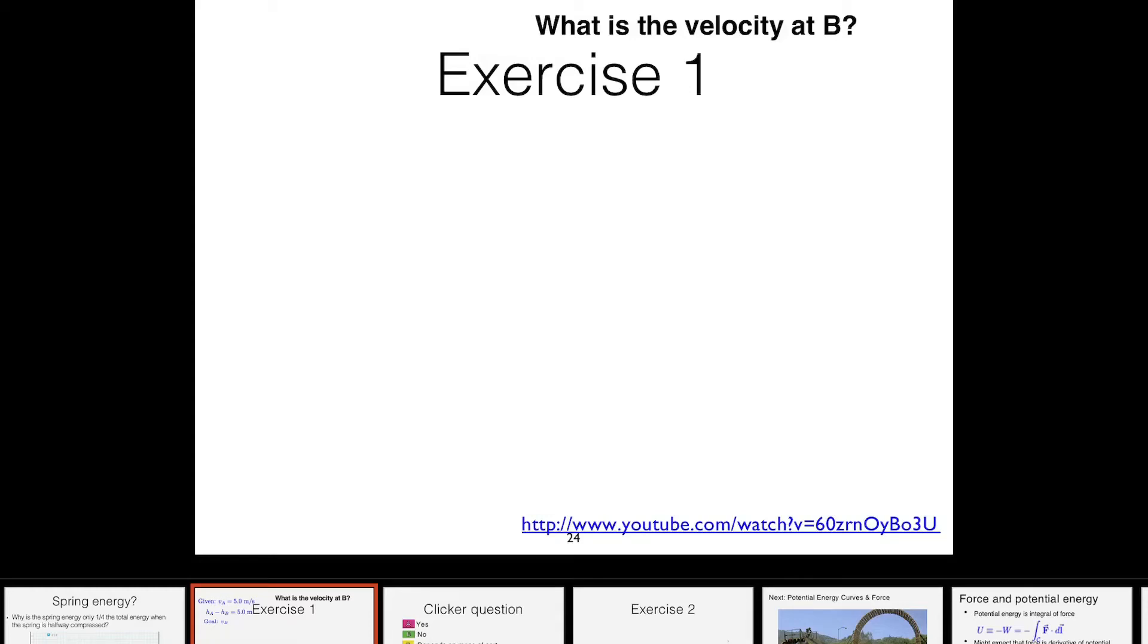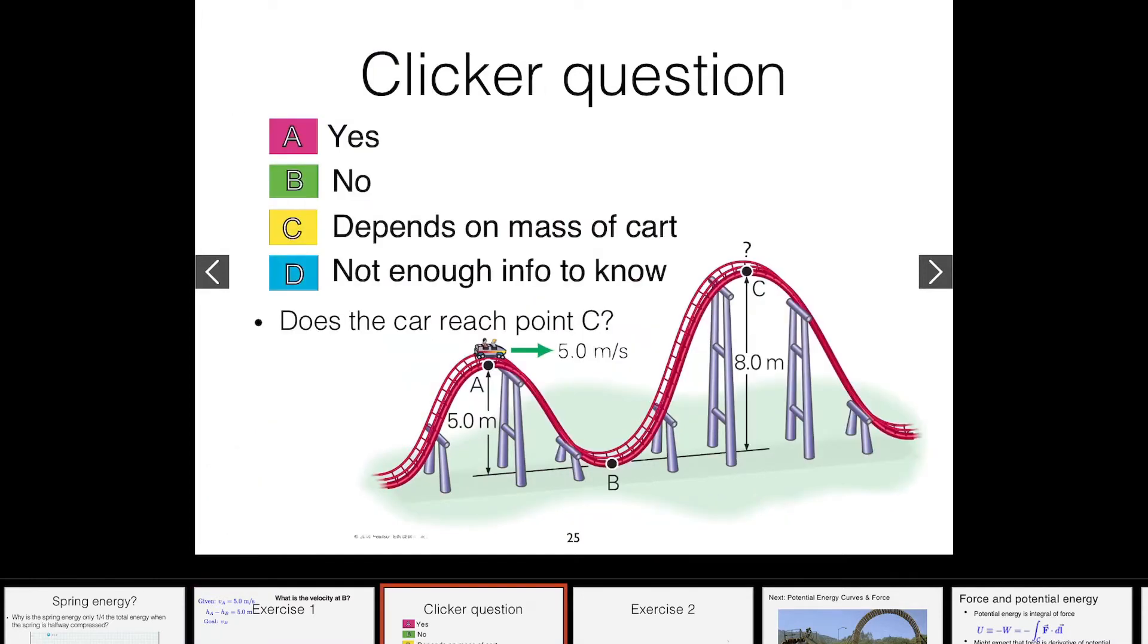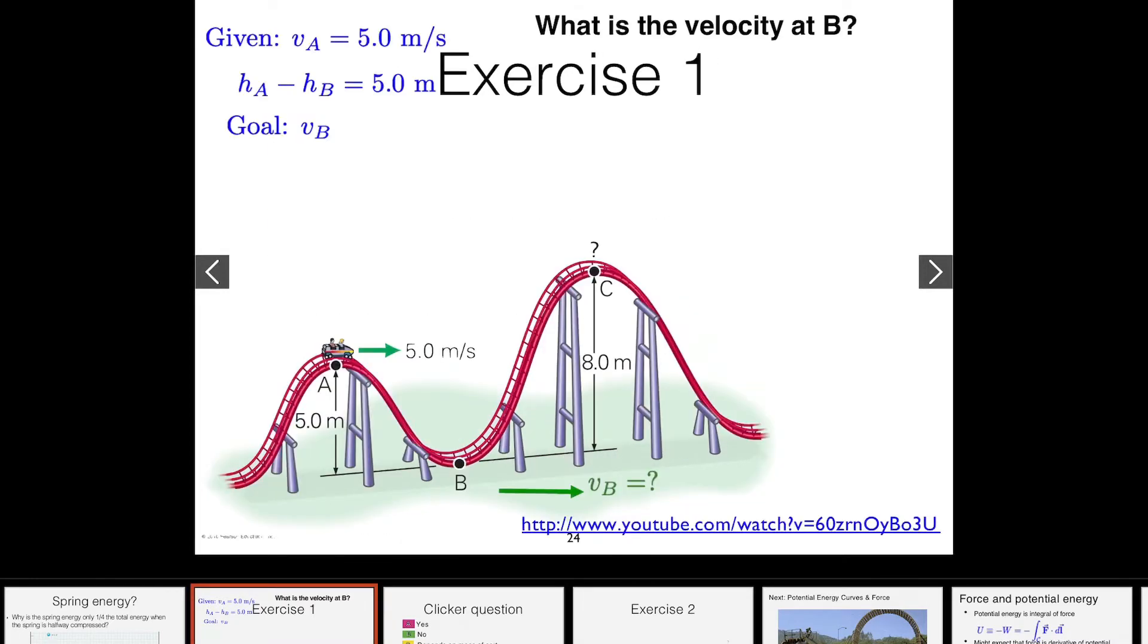Last lecture we talked about this problem where you have a roller coaster which starts at position A and goes to position B. We were trying to figure out if it makes it to position C using conservation of energy. Just by looking at this picture, we know that this roller coaster here...